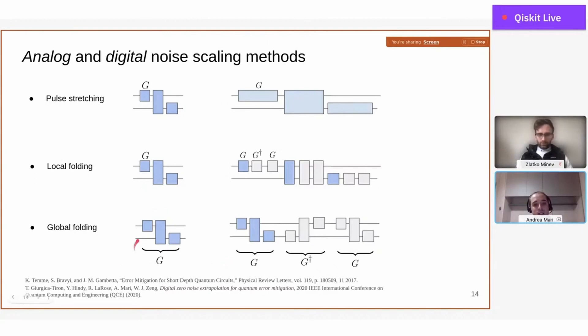In a very similar way, you can apply global folding, which means that now you apply this trick to the full circuit or at least to a full set of layers of the circuit. Again, in the same way as before, you increase the effective length of the circuit and increase the effect of gate errors in the computation.